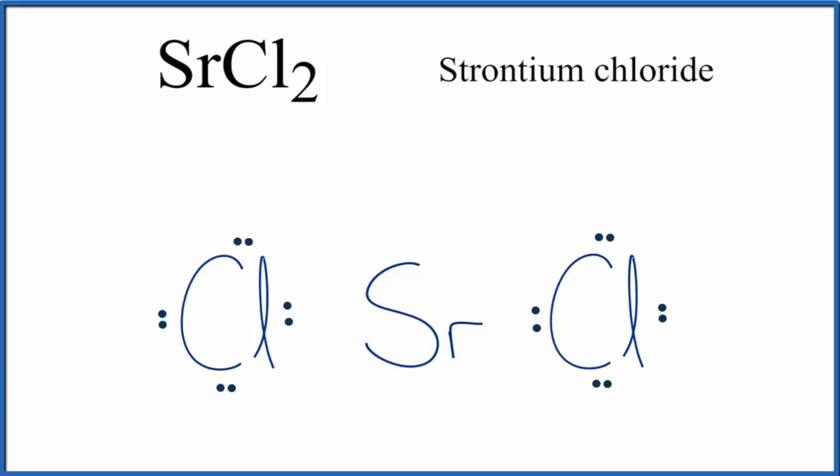So the strontium, it's lost 2 valence electrons. Electrons are negative, they have a negative charge, so it's lost a negative 2. That makes it a 2+. The chlorines, they've gained those negative charges. So we have negative here on this chlorine, and this chlorine's negative as well.